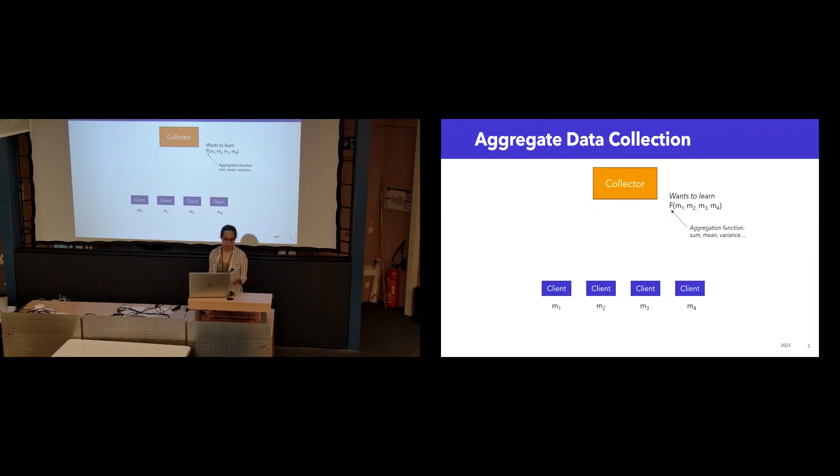The collector only has an interest in population-level statistics. So they want to learn some aggregation function, which could be a sum of client measurements, but it could also be a mean, a variance, a histogram. There are many different options here.